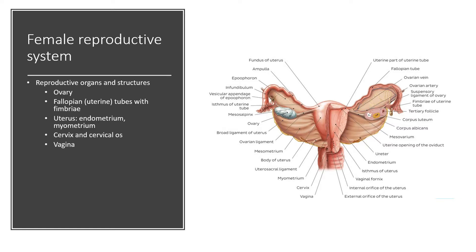Let's talk about the reproductive organs and structures. The ovaries are where eggs are produced. You have your uterine tubes with the fimbriae, also known as fallopian tubes. You have your uterus, which contains the endometrium — the inner lining of the uterus — and the myometrium, which is the muscular portion of the uterine wall. You have your cervix and cervical os, also known as the cervical opening. The cervix means neck, so if you think about the uterus as the head, then the cervix is the neck. Then you have the vagina.